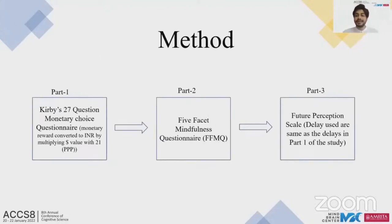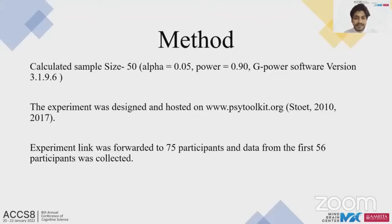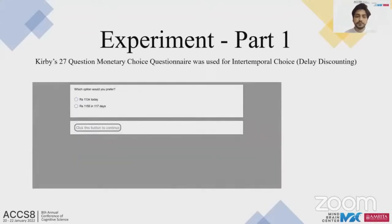The experiment was conducted entirely online, hosted on Scytoolkit.org, and had three parts. The calculated sample size was 50, and the link was shared with 75 participants; data from the first 56 were considered for analysis. The delay discounting measure was Kirby's Monetary Choice Questionnaire (MCQ), which has 27 questions. We converted the original dollar values to Indian rupees based on the current purchasing power parity (PPP) value of ₹21.